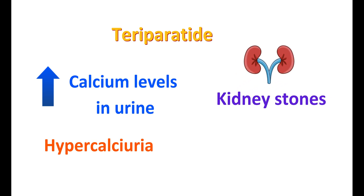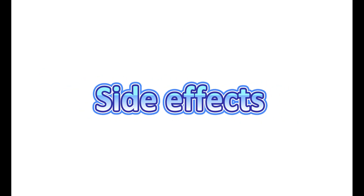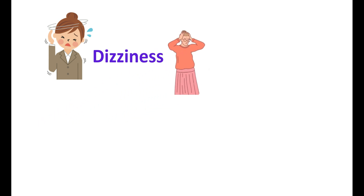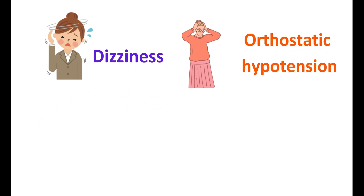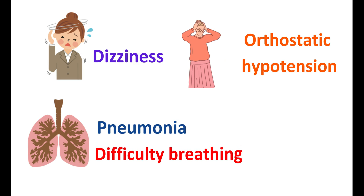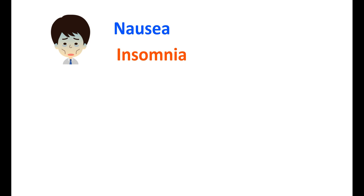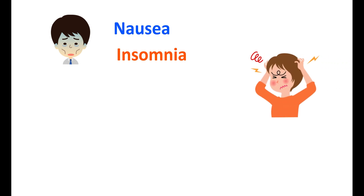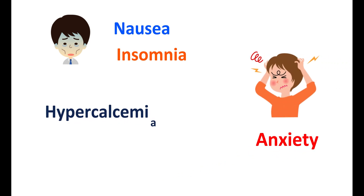In people with any previous history of urolithiasis or kidney stones, teriparatide should be avoided. The main side effects of this medication include dizziness and orthostatic hypotension. It can also cause pneumonia, leading to difficulty breathing. Other side effects include nausea, insomnia, and increased anxiety. Hypercalcemia — elevated calcium levels — can also be observed.